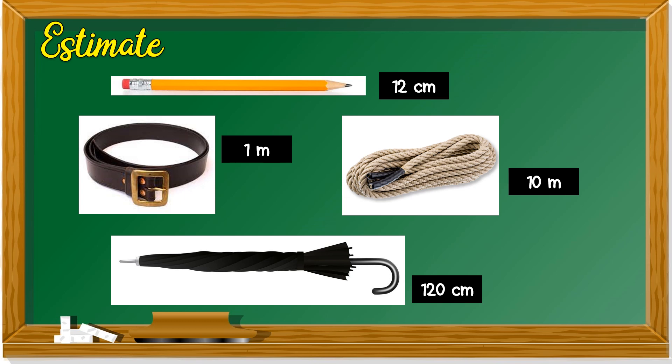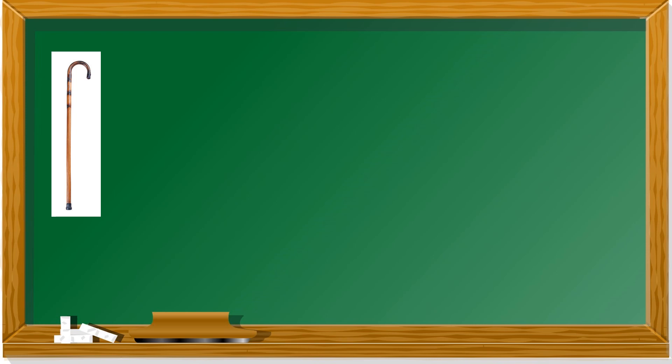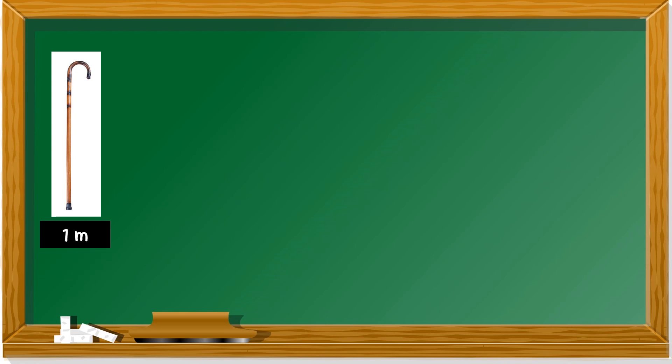Takkanlah payong pendek macam pembaris kamu. We continue on with a few more examples. How about this one? It's a cane — a walking stick. Your grandfather or grandmother might use this to walk. Is it 1 meter or 10 meter? Yes, it's 1 meter. If it's 10 meter, it's too long.